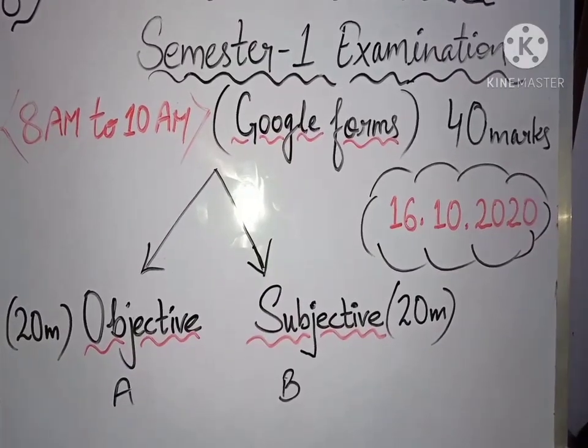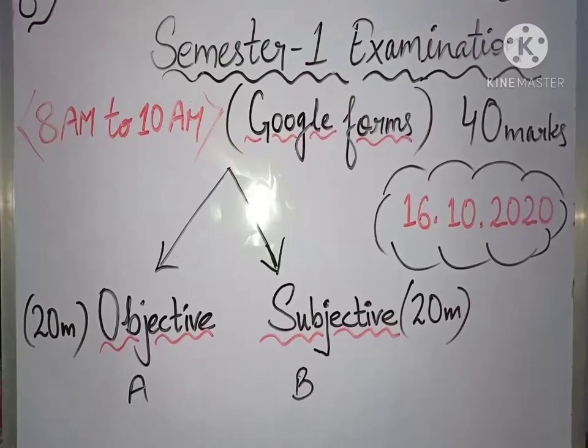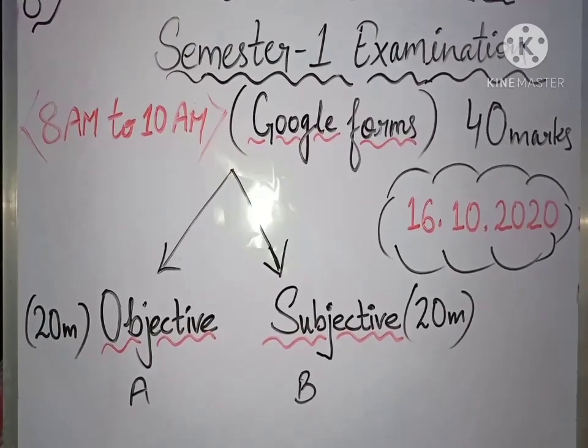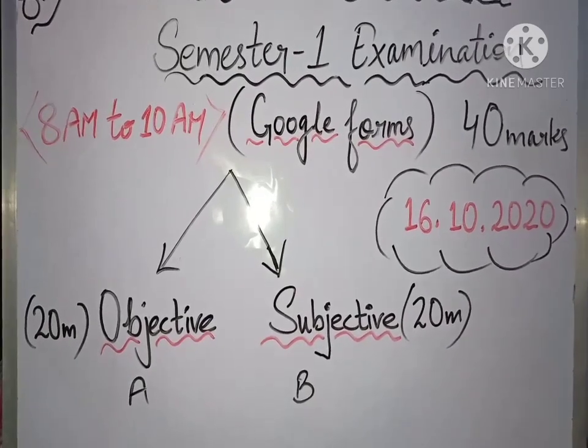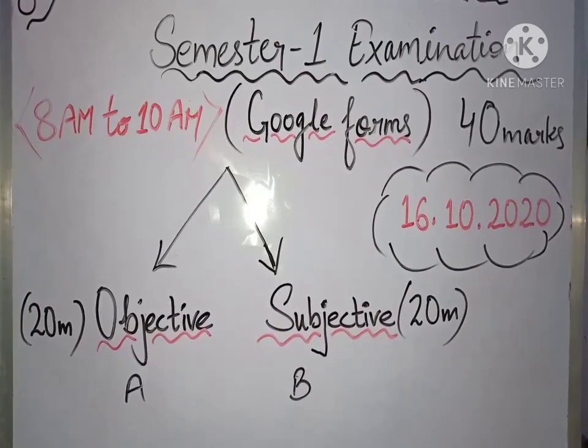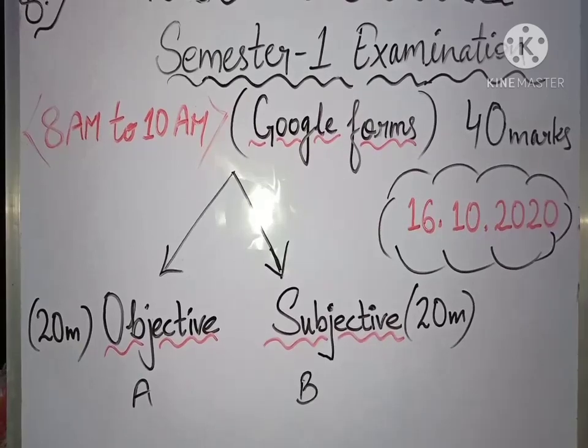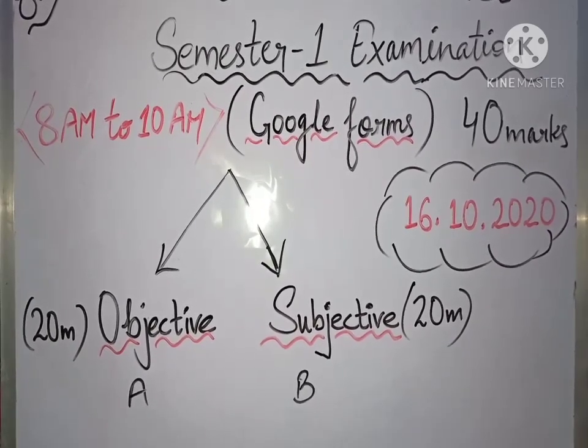In part A, objective type, there will be multiple choice questions. It means you have to click on the correct option as there will be four options. And in part B, there will be subjective type questions in which you have to write the answers. The answer may be in two line or three line or may be in paragraph.